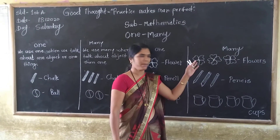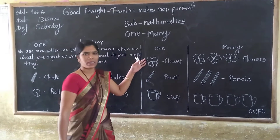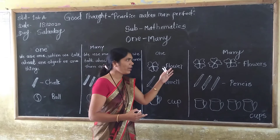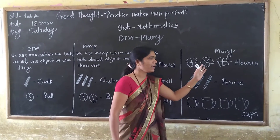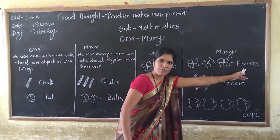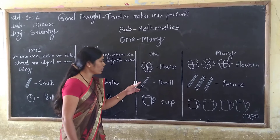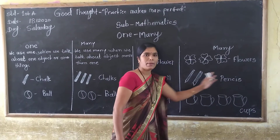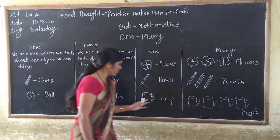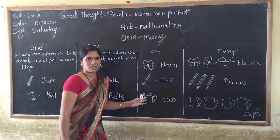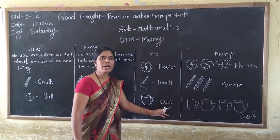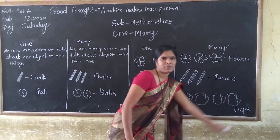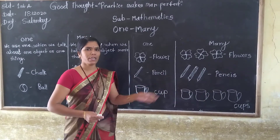Here — only one flower, and those are many flowers. Next: only one pencil, and these are many pencils. And last: this is only one cup, and these are many cups.